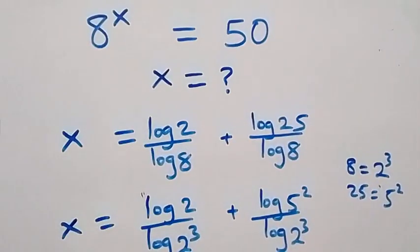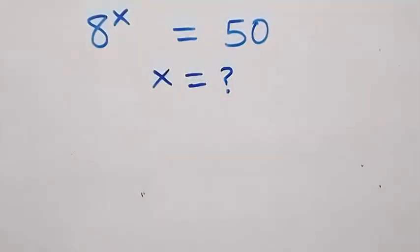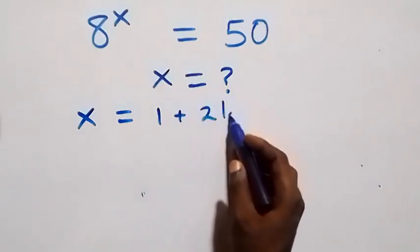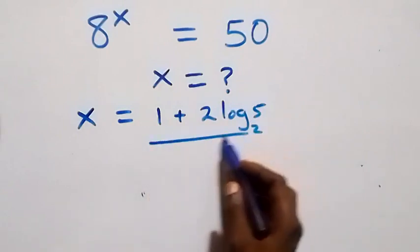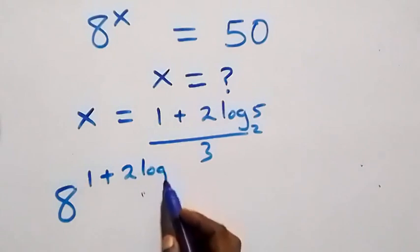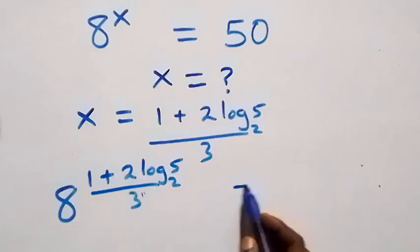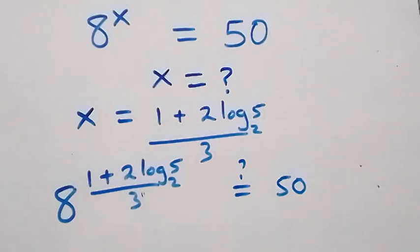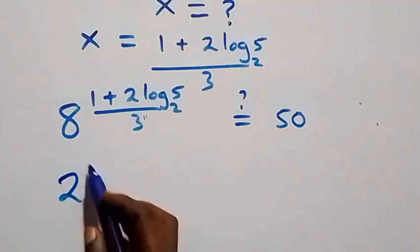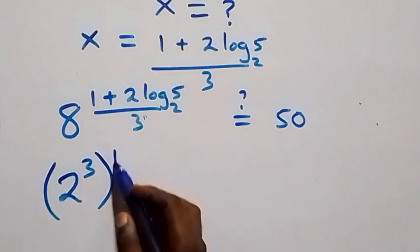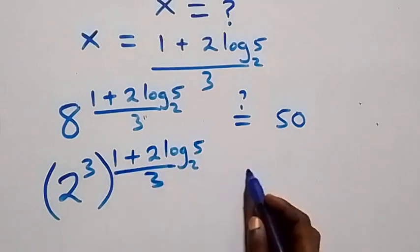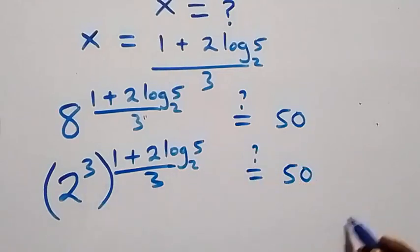We will substitute the value of x back into the original equation. That is, x equals to 1 plus 2 log base 2 of 5, all over 3. What we have becomes 8 raised to the power of 1 plus 2 log base 2 of 5, all over 3, equals to 50. We can rewrite 8 as 2 raised to power 3, raised to that same power.